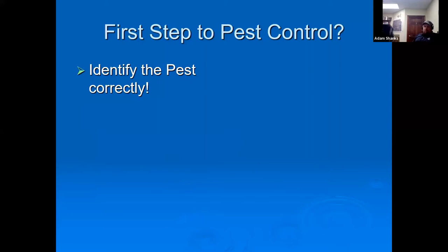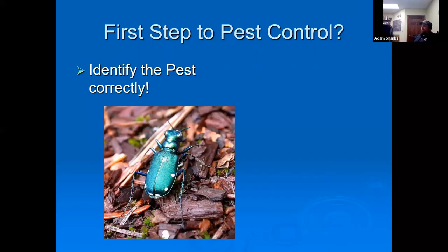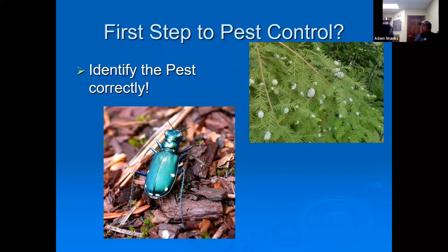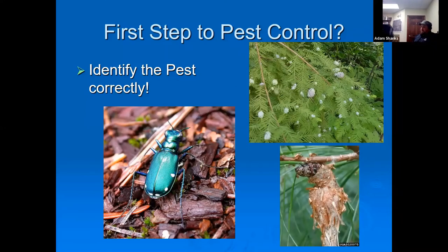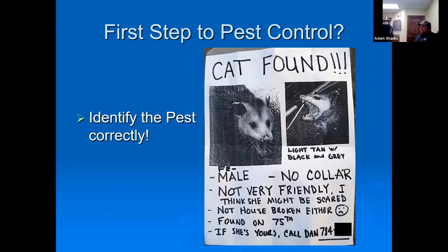The very first step in pest control is correctly identifying the pest. You don't know what to treat with if you haven't properly identified the insect, the fungus, the weed, or whatever you're trying to eradicate. You must identify it first to properly find the right product. If you misidentify what you're treating, you can have some real problems.